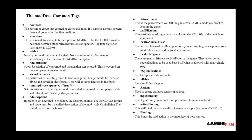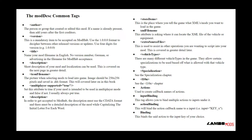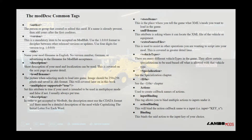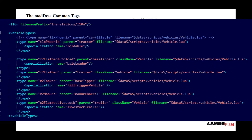Another tag you're going to experience is vehicle types, and this gets to be fun because you can make your own custom vehicle types. There are many different types of vehicles in the game that allow certain specializations to be used based on what is allowed with that vehicle type — these are usually predefined deep inside Giants' coding. But you can make your own custom one. Looking at David's 82 Studios TLX again, you can see right underneath the L10N tags there are vehicle types. He has made a custom type here using the parent tractor, but renamed it TLX Phoenix, and he'll be referencing this name inside of his vehicle XML.